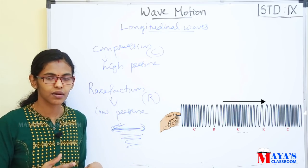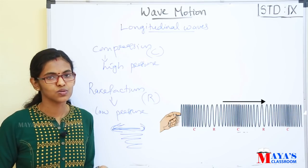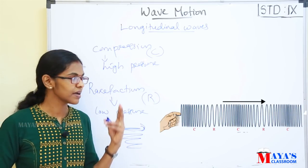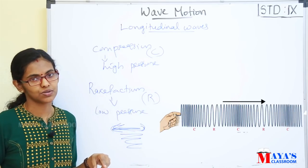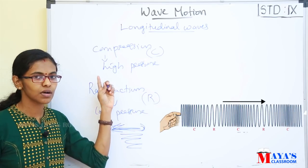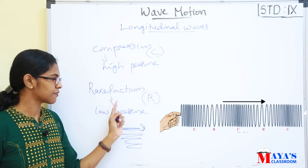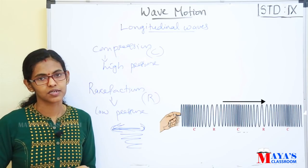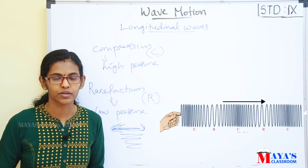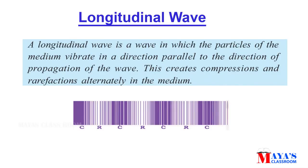That is not the same as transverse waves. It is called longitudinal waves. In longitudinal waves, there is compression or rarefaction. Compression is the high pressure area. Rarefaction is the low pressure area. A longitudinal wave is a wave in which the particles of the medium vibrate in a direction parallel to the direction of the propagation of the wave. This creates compressions and rarefactions alternately in the medium.